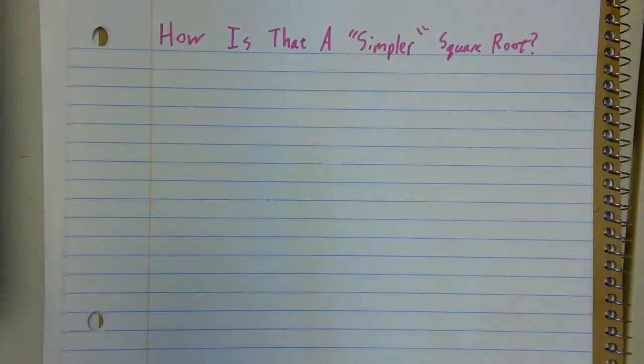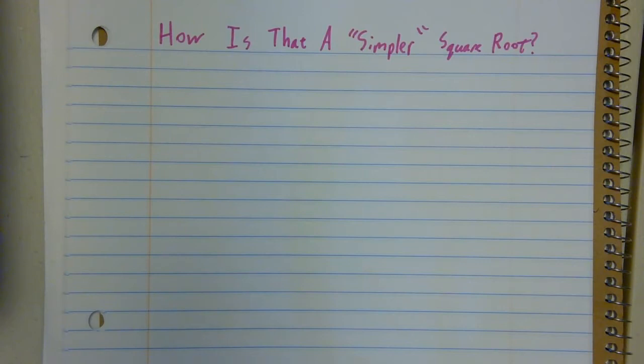So some of you are asking yourself, okay, I get how to do it, but how is that square root any simpler than the one I started with? It seems like I just complicated it up and the directions didn't say complicate a square root. So here's why it helps to be able to simplify square roots. It lets you recognize things that you can combine.